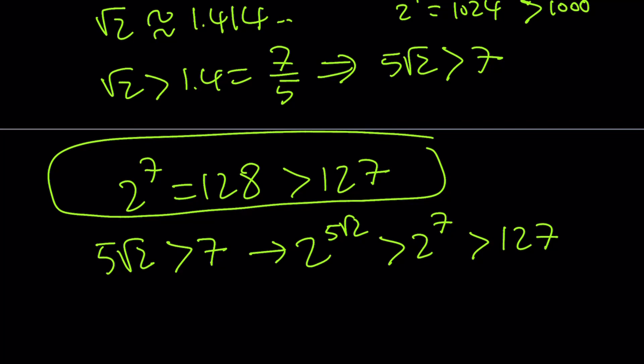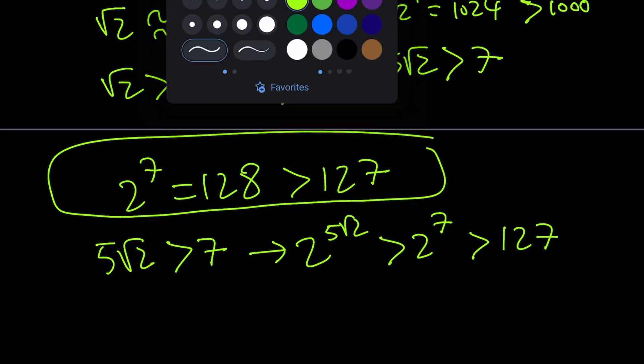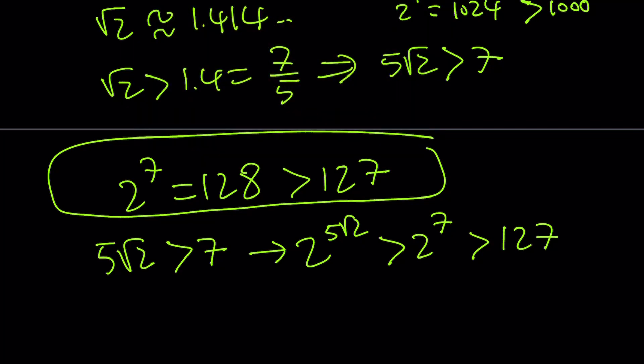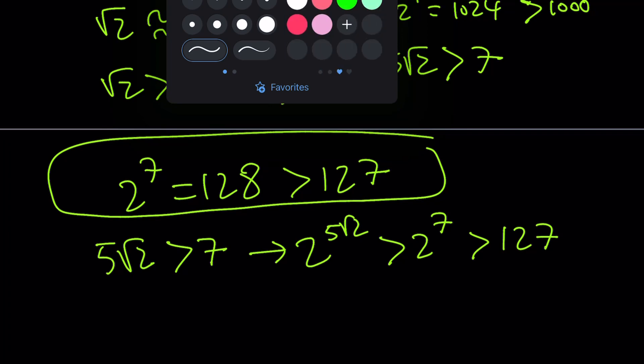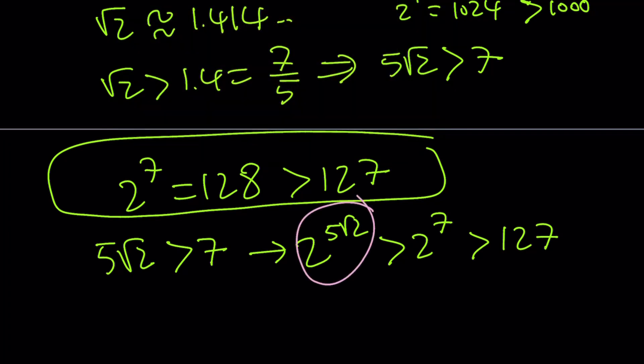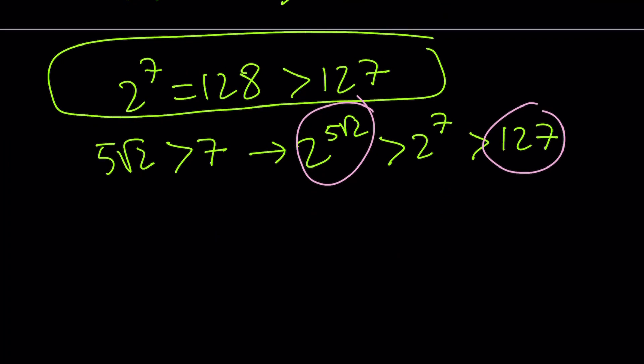So, forget about everything in the middle. And we end up with these two things. This is greater than that. So, conclusion. 2 to the power of 5 root 2 is greater than 127.